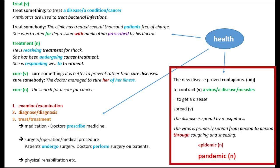On the right we start with the adjective contagious: 'The new disease proved contagious.' To contract is a verb — you can contract a virus, a disease, or measles — meaning to get a disease through close contact. Next, spread as a verb: 'The disease is spread by mosquitoes' and 'The virus is primarily spread from person to person through coughing and sneezing.'